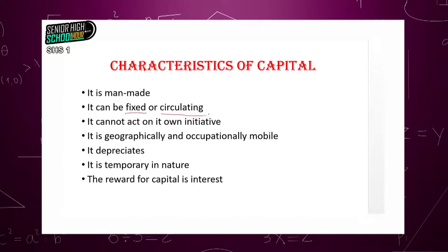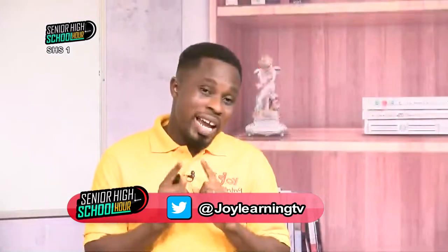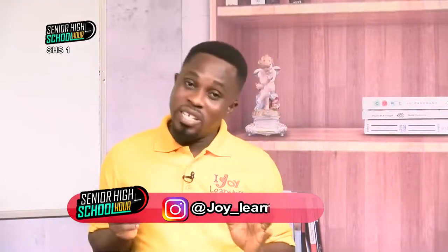As for capital, it is both geographically and occupationally mobile. To a large extent, you can move machines from one place to another — I say 'to a large extent' because there could be exceptions; for instance, you cannot move a high-rise building from one place to another. But many machines, equipment, and tools can be moved from place to place. Capital is also occupationally mobile, meaning with a particular machine you can use it for several purposes.